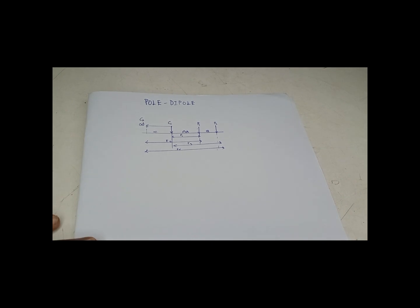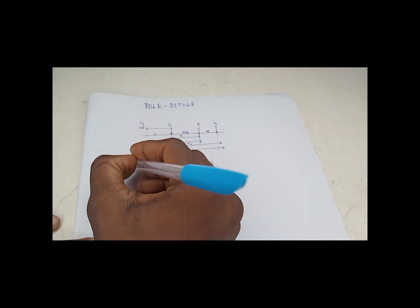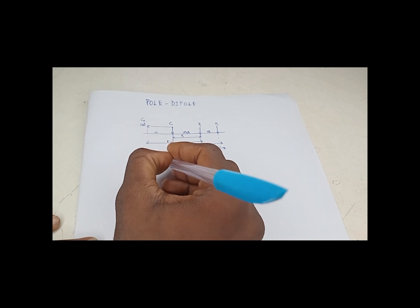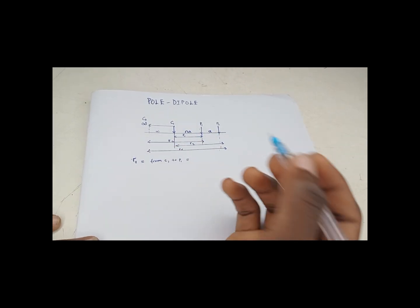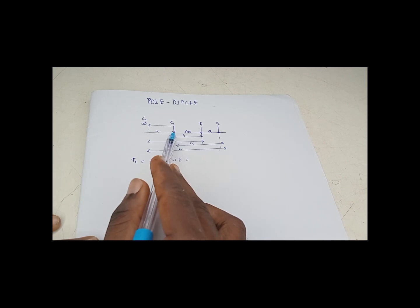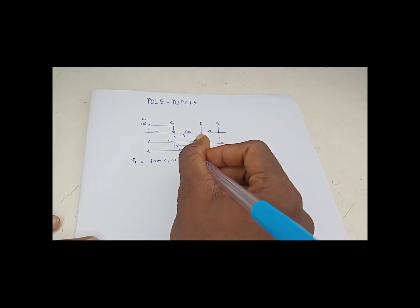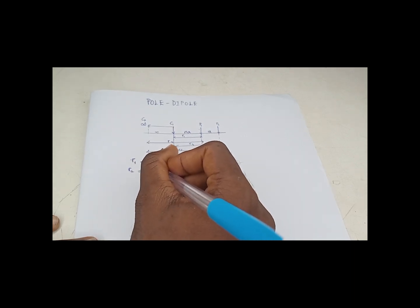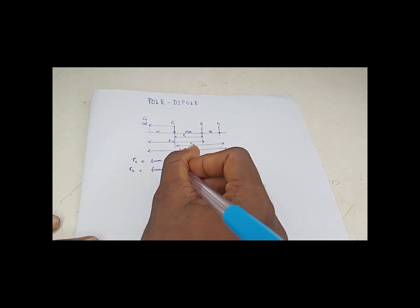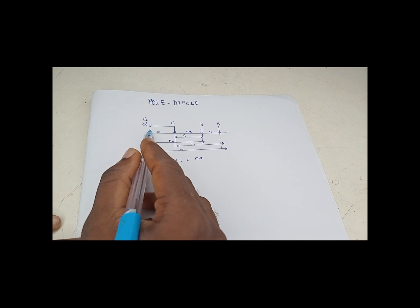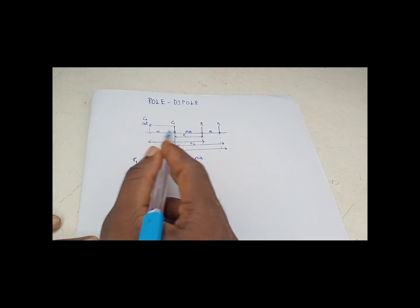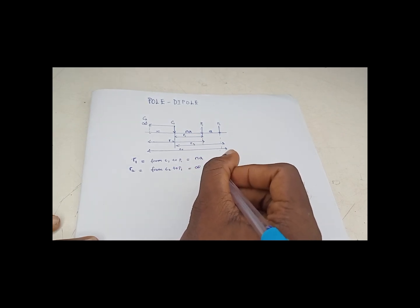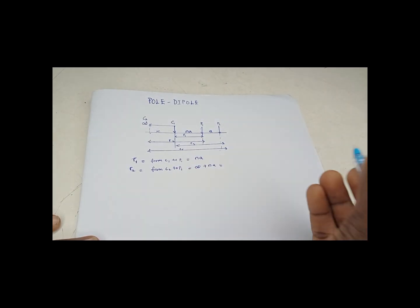Just to show your device what I've said earlier. Don't forget R1 is from C1 to P1. So distance from C1 to P1. C1 is here, P1 is here. So what's that distance? N times A. R2, from C2 to P1. So C2 is at infinity. So even if the distance from C1 to C2 is at infinity, you now add infinity plus N times A. Infinity plus anything is still infinity.